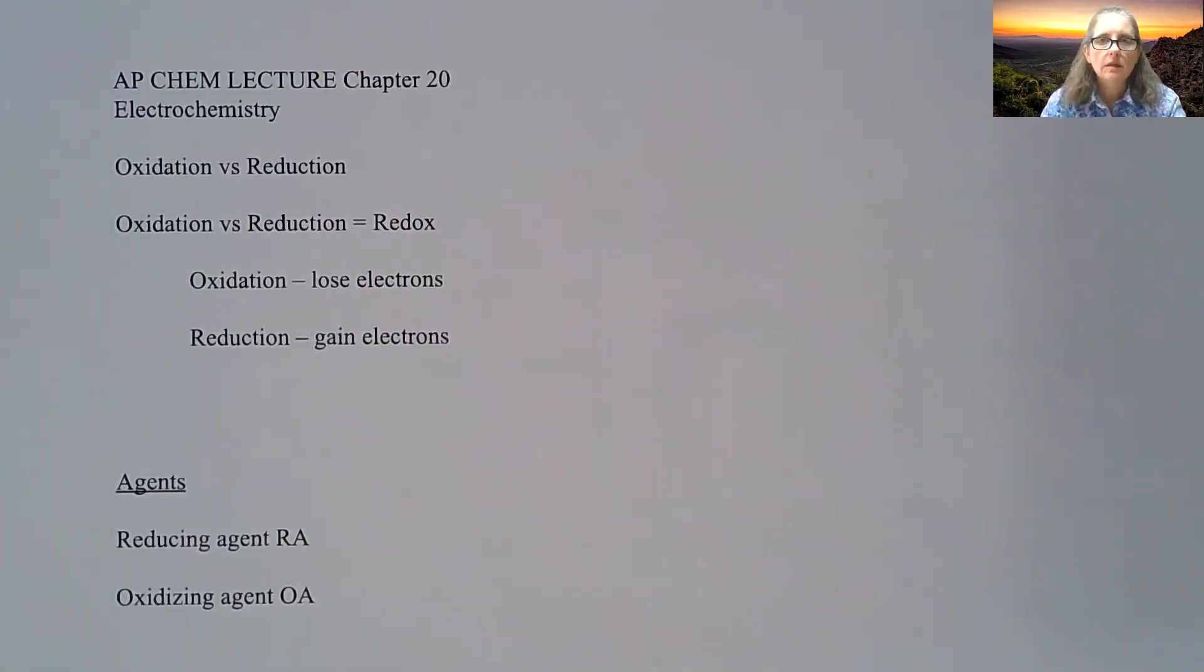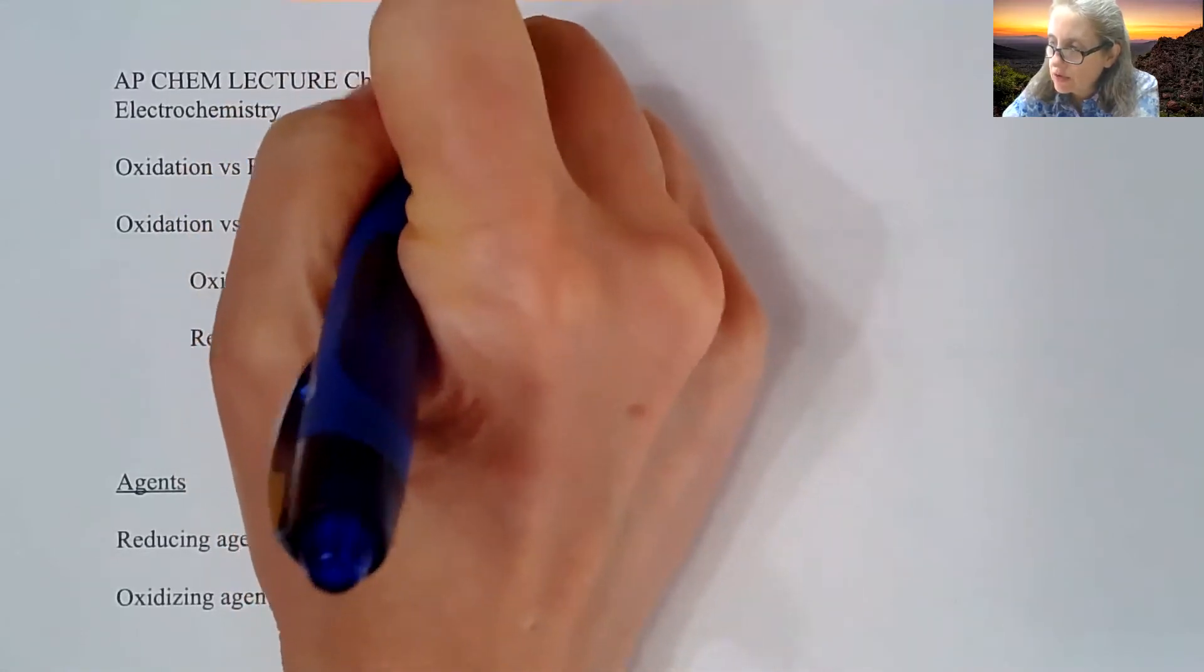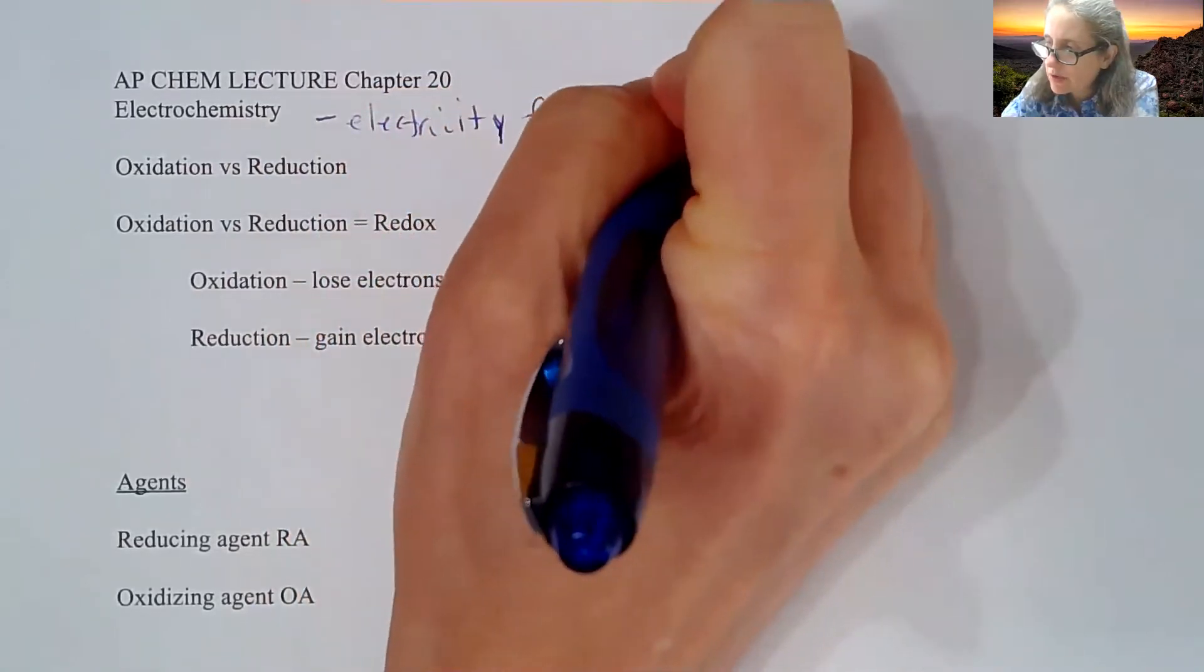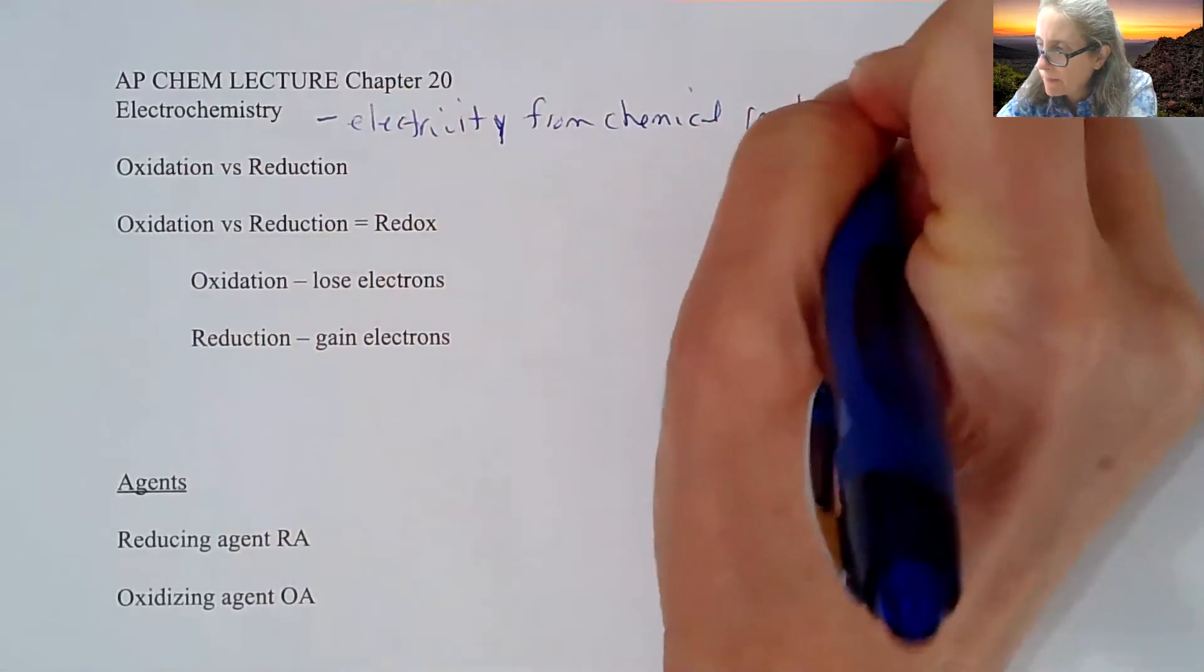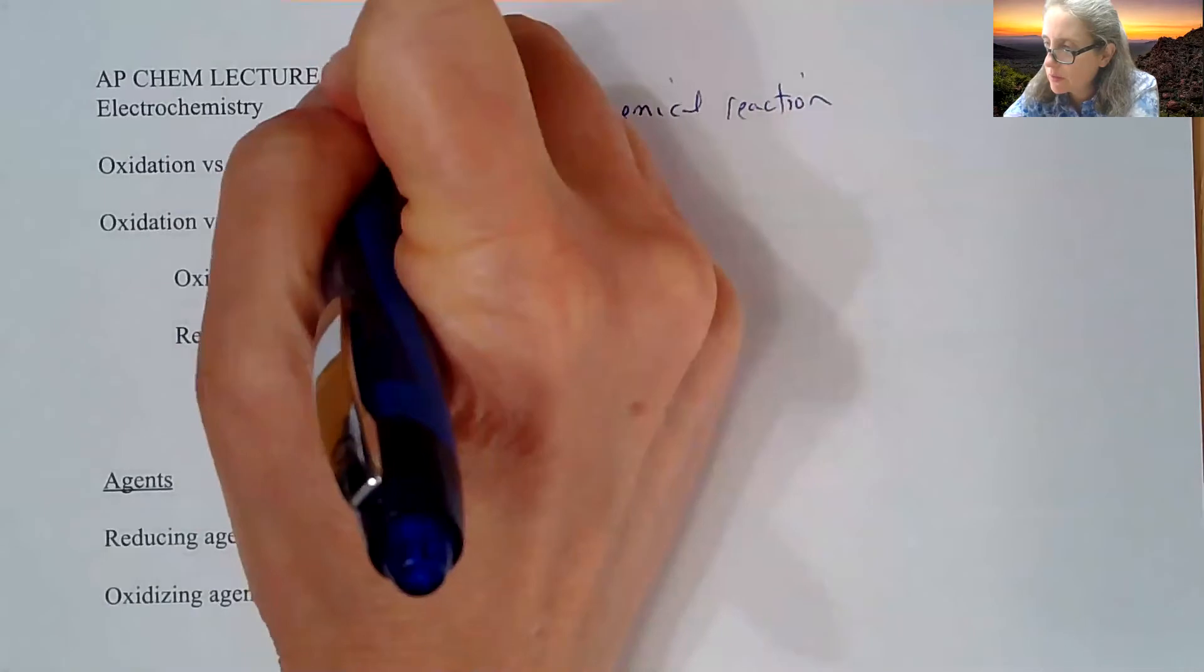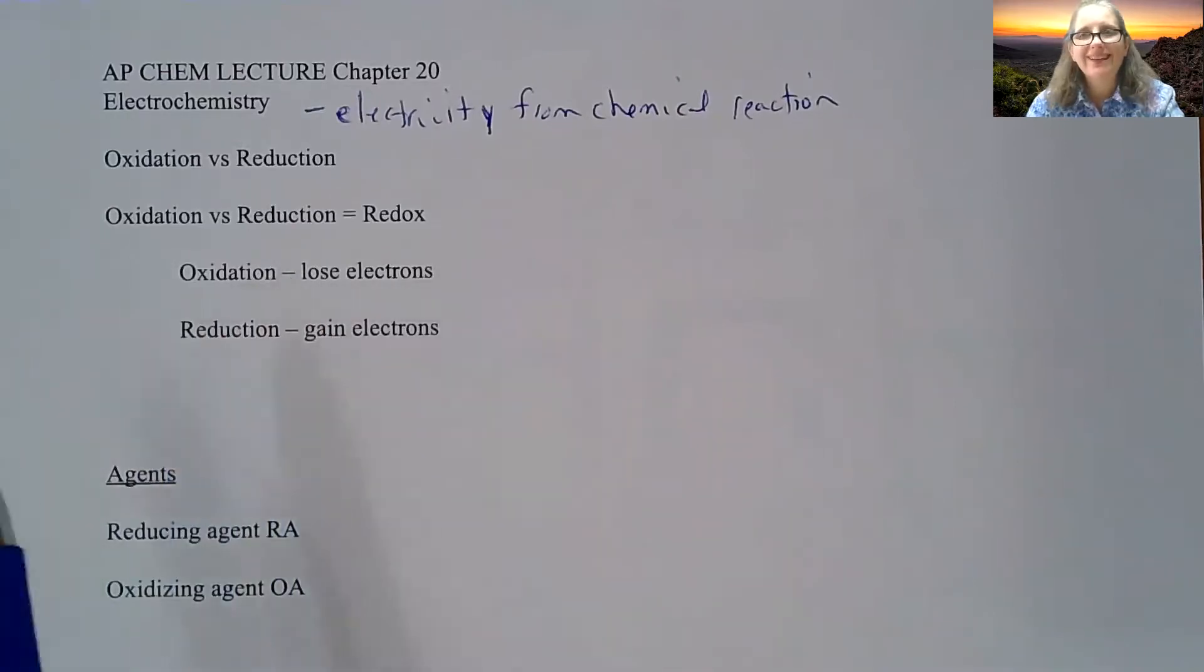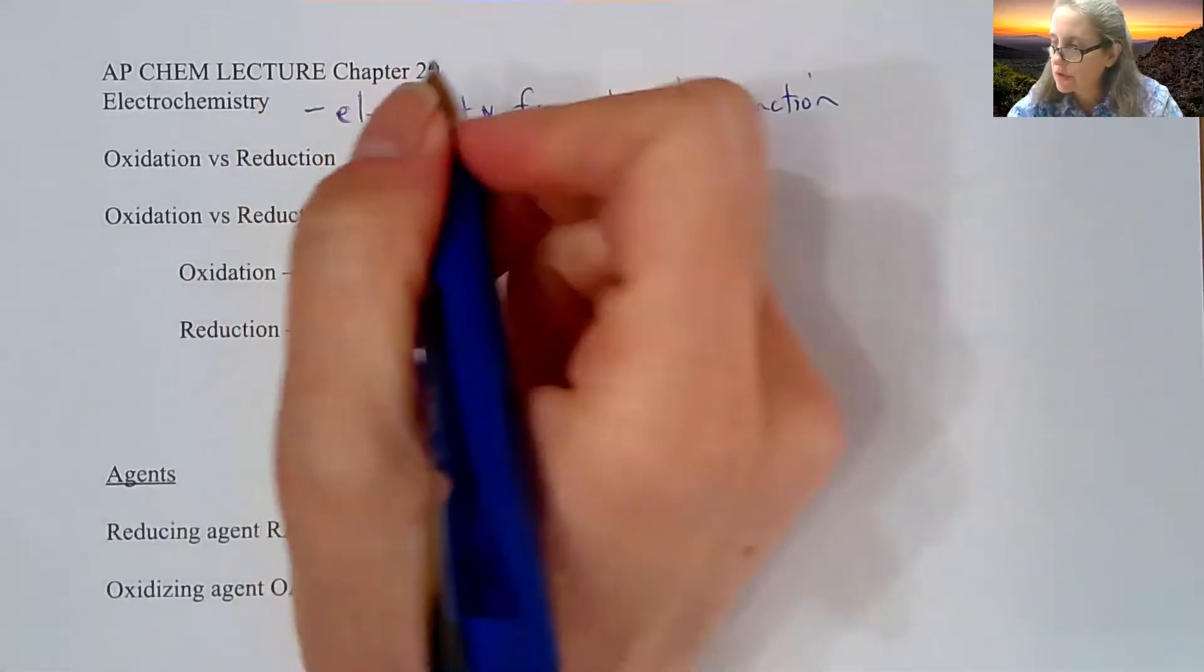This is starting Chapter 20, which focuses on electrochemistry. Electrochemistry is, in general, getting electricity from a chemical reaction. So, electricity from a chemical reaction. We've kind of introduced the idea of losing or gaining electrons from first semester, so this first page is going to be a little bit of review. Electrochemistry is focused on electricity transfer of electrons, so that's why we're going to talk about oxidation versus reduction.